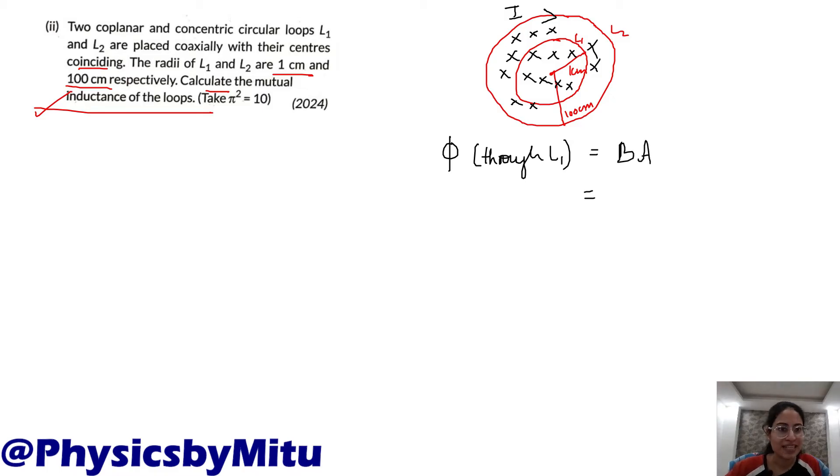The magnetic field, the second loop is L2. What is the formula of magnetic field due to L2? At the center of the circular loop: μ₀/4π times 2πI/R. This is the formula of magnetic field due to a current carrying loop at the center of the loop. If the current is I and radius is R, this is the formula.